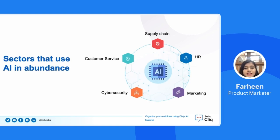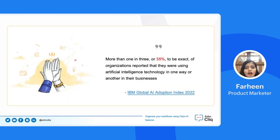Some of the most common sectors that use AI in abundance are cybersecurity, customer service, supply chain, HR, and marketing. According to the IBM Global AI Adoption Index 2022, more than one in three — or 35% to be exact — of organizations reported that they were using artificial intelligence technology in one way or another in their businesses. So this means that every business sector uses AI in one form or the other.